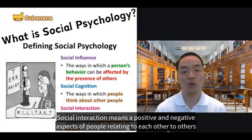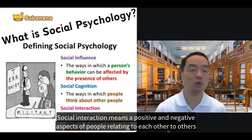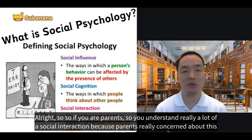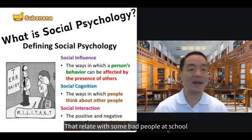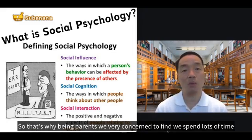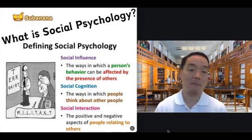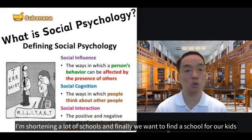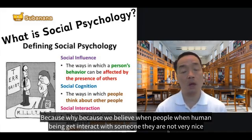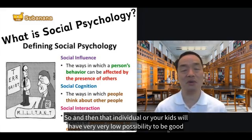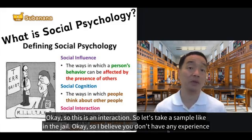Last, social interaction means the process of negative aspects of people relating to each other. If you are a parent, you understand a lot about social interaction because parents are really concerned about avoiding any negative consequences while their kids relate with bad people at school. That's why parents spend a lot of time searching for schools with good students and good teachers, because we believe that when human beings interact with people who are not very nice, the individual has very little possibility of turning out good.